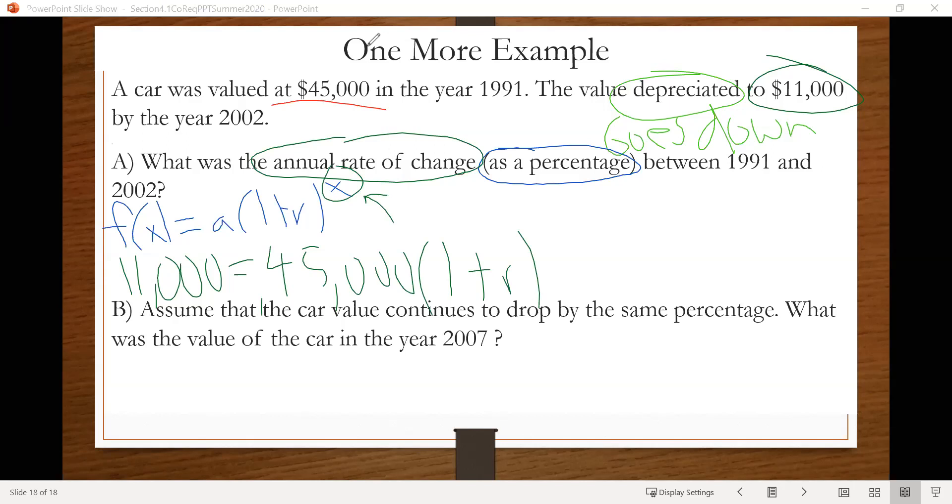And then we need to have something for a value of X. And notice that in most of these problems, the value for X has been the number of years. So notice that we start in 1991 as our starting year. And then the ending year is 2002. But we're not going to plug in 2002 for the value for X. What are we going to plug in instead?